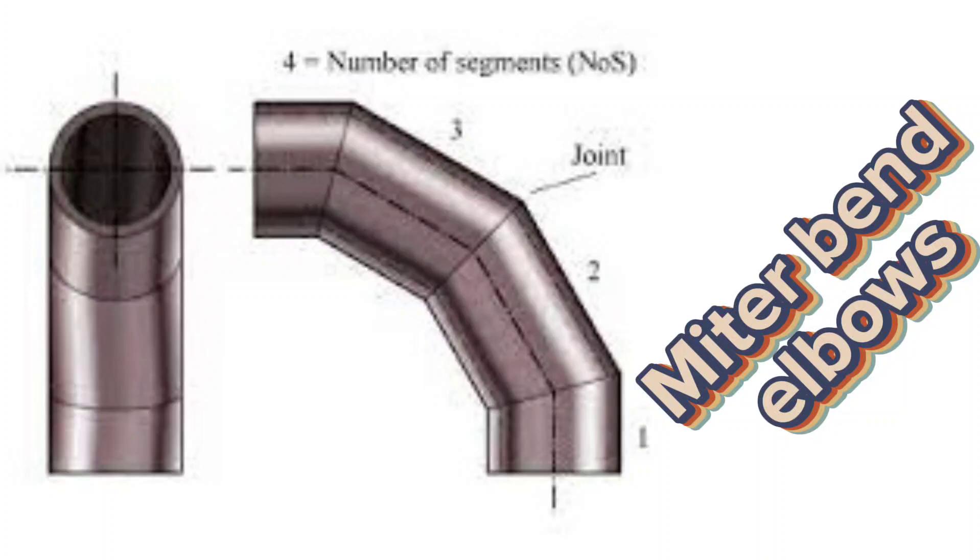Miter bends can be fabricated with 2, 3, 4, and 5 miters. Miter bend elbows are used above 6 inch for utility lines.